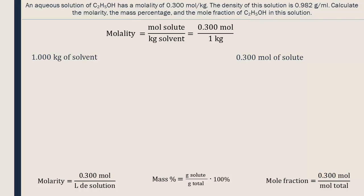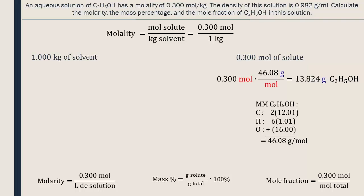Now that we know how many moles of C2H5OH we have, we can multiply this value by its molar mass to determine the quantity in grams. To calculate the molar mass, add the mass of all the atoms in the compound. The mass of the solute will be inserted into the mass percentage equation.